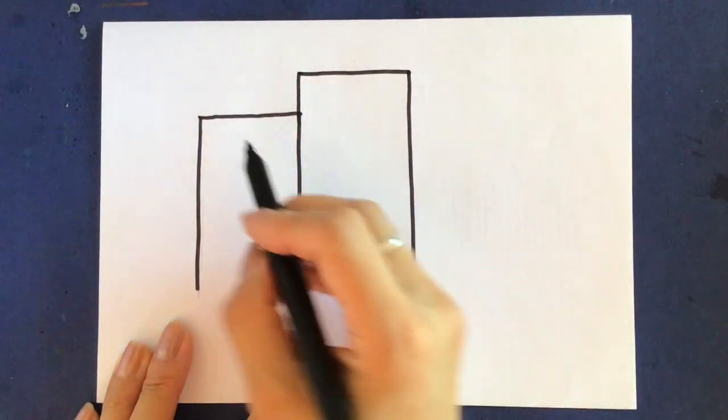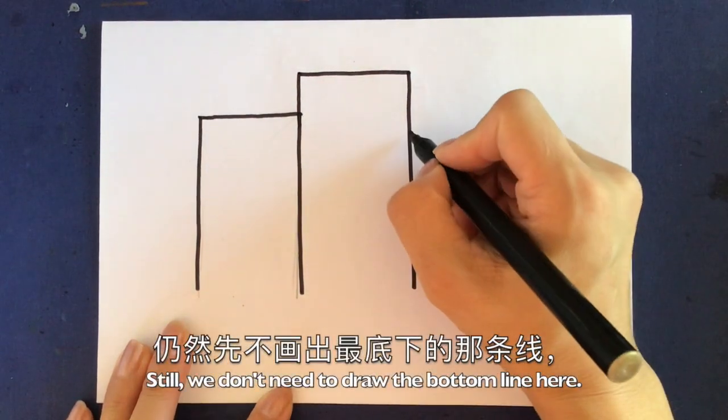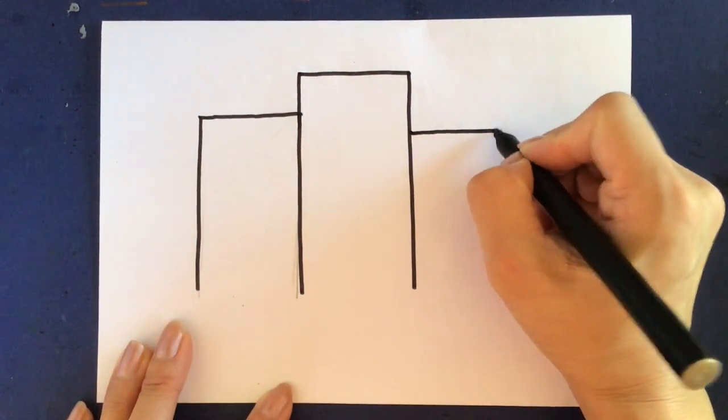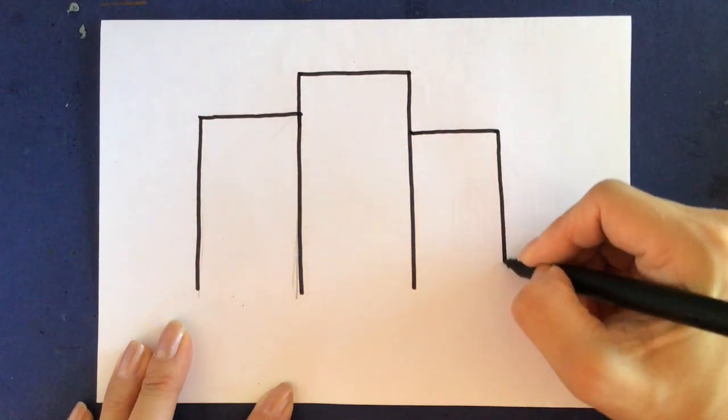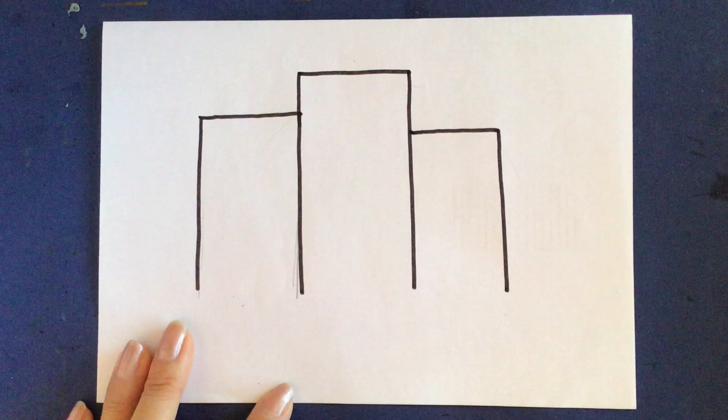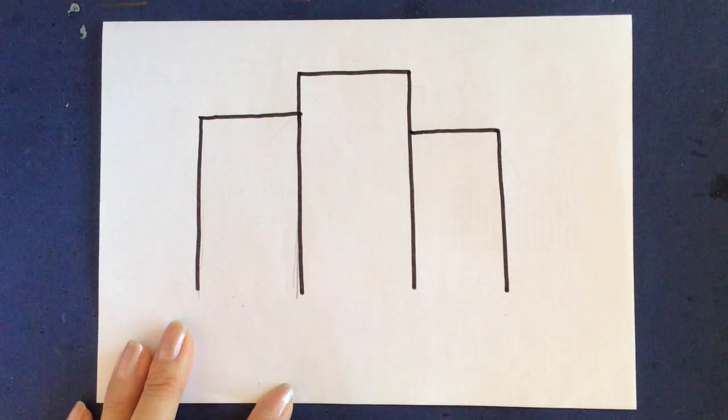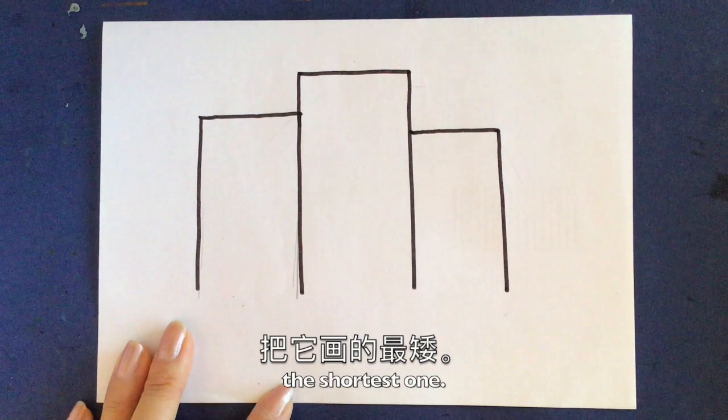这个长方形画高一点。We draw this one a little bit taller than the first rectangle. 仍然先不用画出最底下的那条线。Still, we don't need to draw the bottom line here. 使用同样的方法, using the same way, 我们画出第三个长方形。We draw the third rectangle, this is the shortest one.